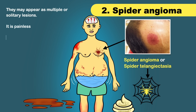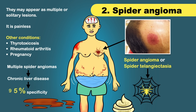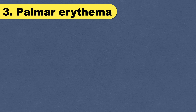Remember, spider angioma can be seen in many other conditions like thyrotoxicosis, rheumatoid arthritis, and pregnancy. However, multiple spider angiomas are characteristic of chronic liver disease, with a specificity of 95%.